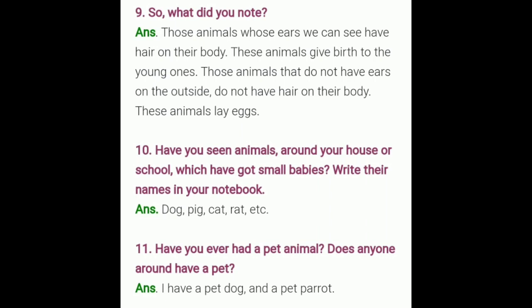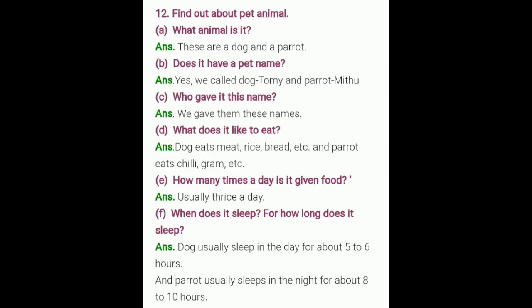Next question: have you ever had a pet animal? Does anyone around you have a pet? Answer: I have a pet dog and a pet parrot — you can write your own pet animal's name here. Find out about your pet animal: What animal is it? Answer: a dog and a parrot. Does it have a pet name? Yes — we call the dog Tommy and the parrot Mithu. Who gave it this name? We gave them these names. What does it like to eat? Dog eats meat, rice, bread, etc., and parrot eats chili, gram, etc.